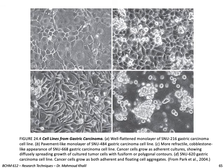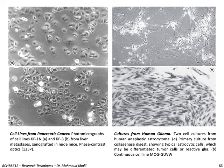Finally, you can see four figures for cell lines generated from gastric carcinoma. You can see how the cells behave and the differences in shape between these cell lines. Most are monolayer cells, but some, like figure D — a type of gastric carcinoma cell line — grow in patches or colonies, though still as a monolayer. Additional figures show other cell lines: the first two from pancreatic cancer and the second two from human glioma, each with characteristic and differing shapes.